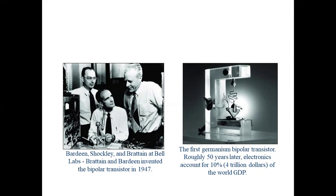The three scientists — Bardeen, Shockley, and Brattain — invented the first bipolar junction transistor in 1947. The second picture shows the first germanium bipolar transistor, and roughly ten years later, in 1957, the first commercial transistor was developed at Bell Labs.